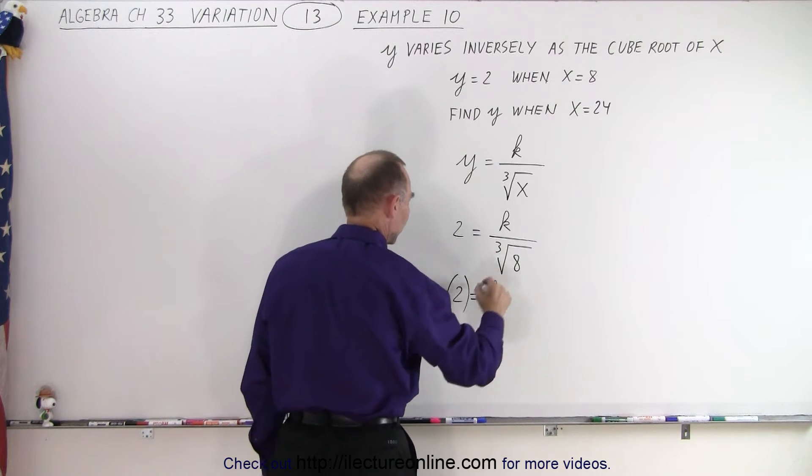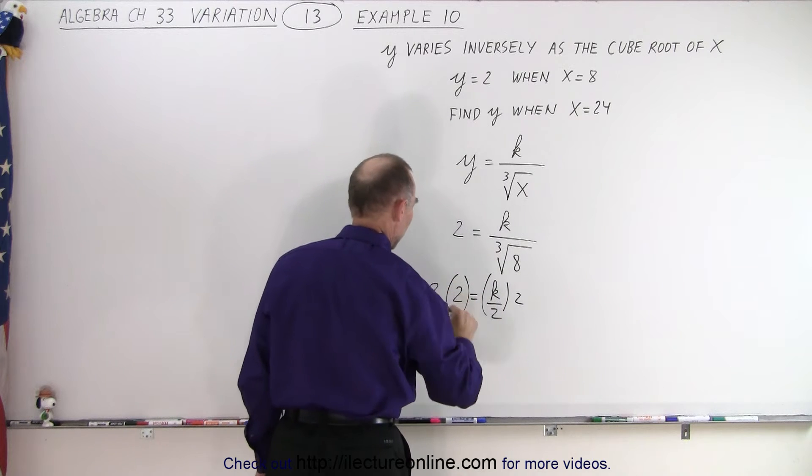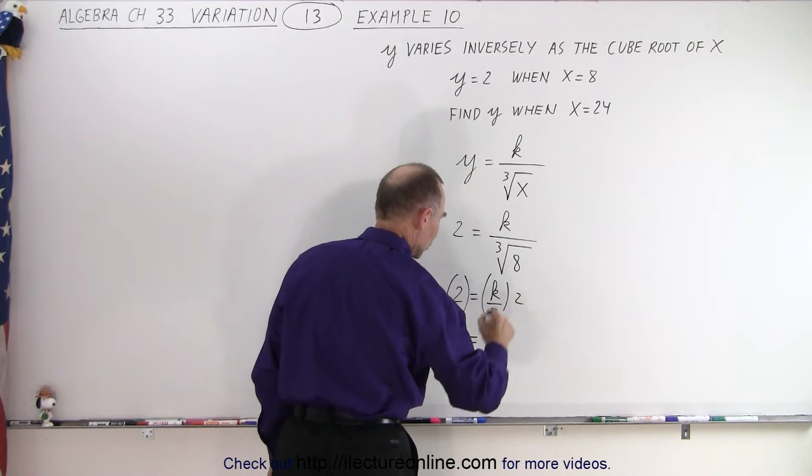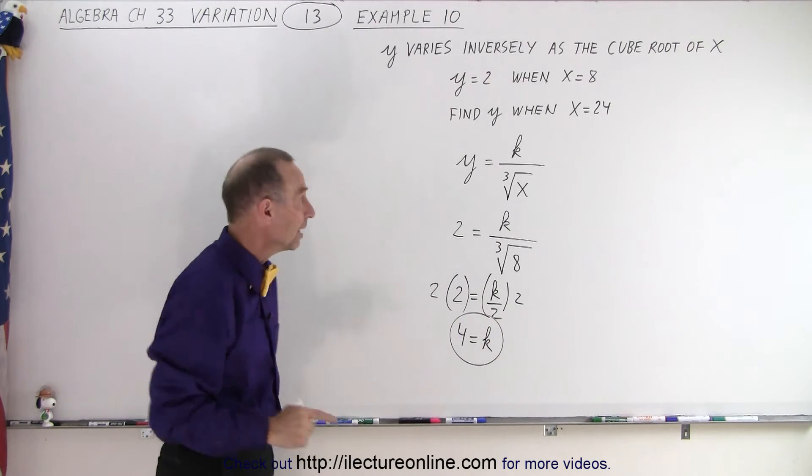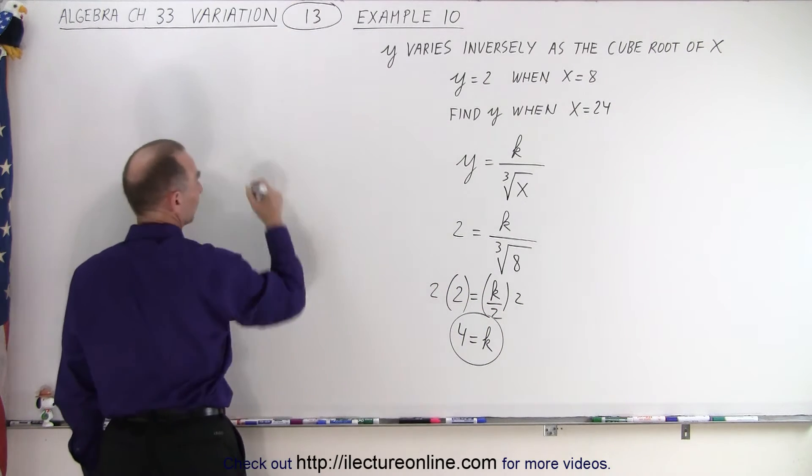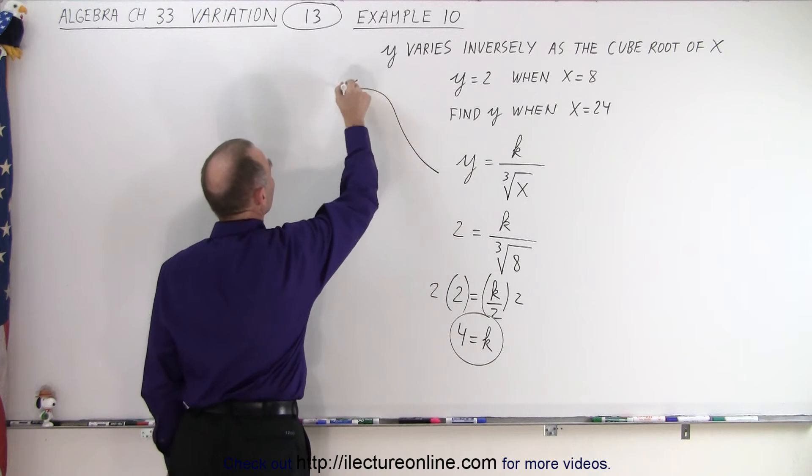Then we multiply both sides by 2, and we get 4 is equal to, the 2's cancel out, which is equal to k. So there we find the value for k, and we plug that into our equation. So that means that now that we know k,